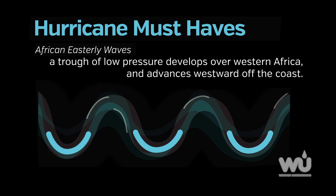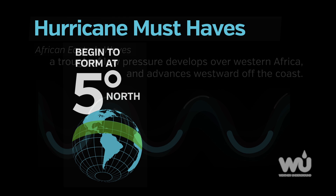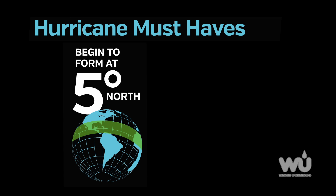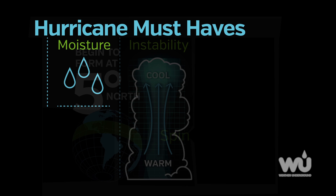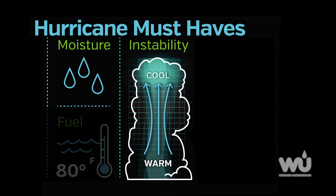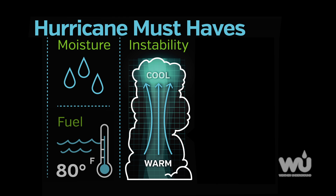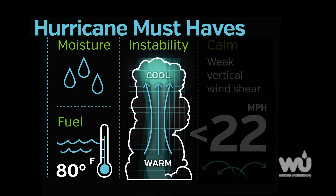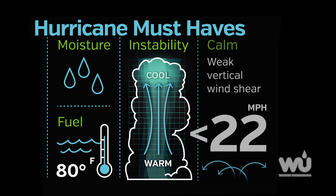These systems usually begin to form around 5 degrees north latitude and can develop counter-clockwise spin or rotation given the right conditions: moisture, instability, warm ocean waters, and weak vertical wind shear.